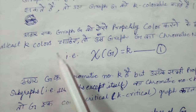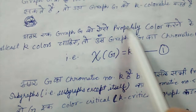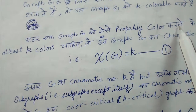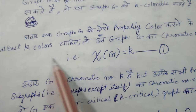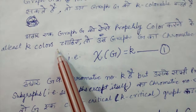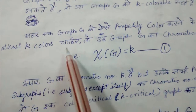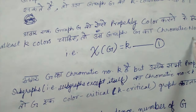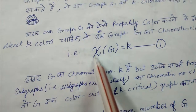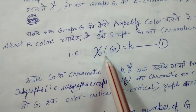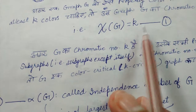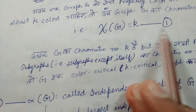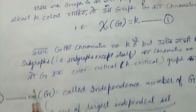If to properly color a graph we require at least k colors, then we call its chromatic number to be k, and it is represented by the symbol χ (chi) — so χ(G) = k. This is our first notation in this coloring lecture.